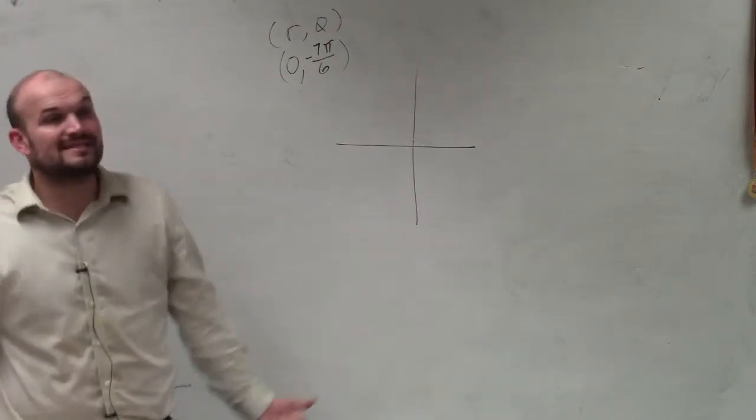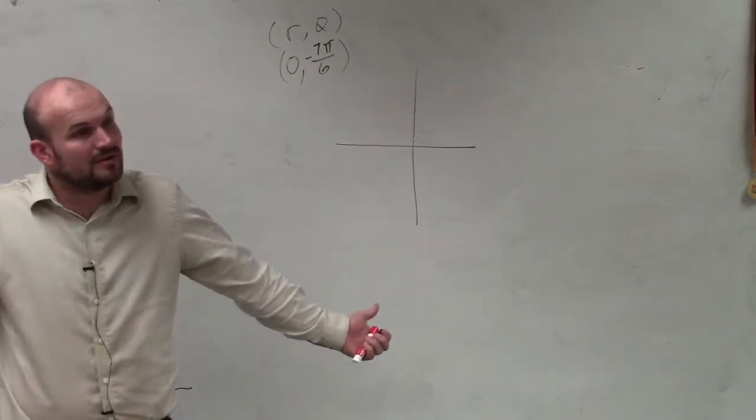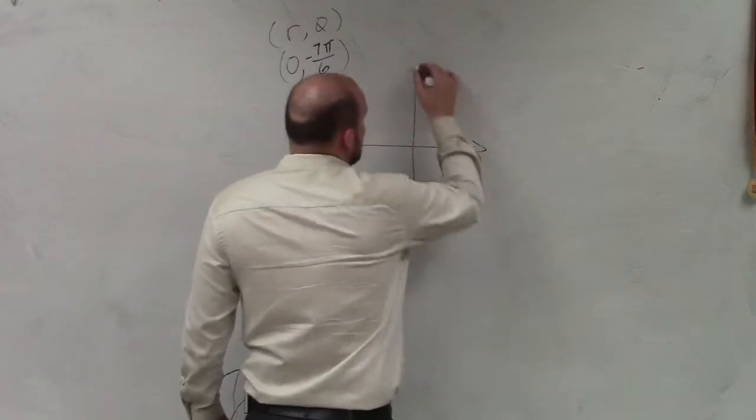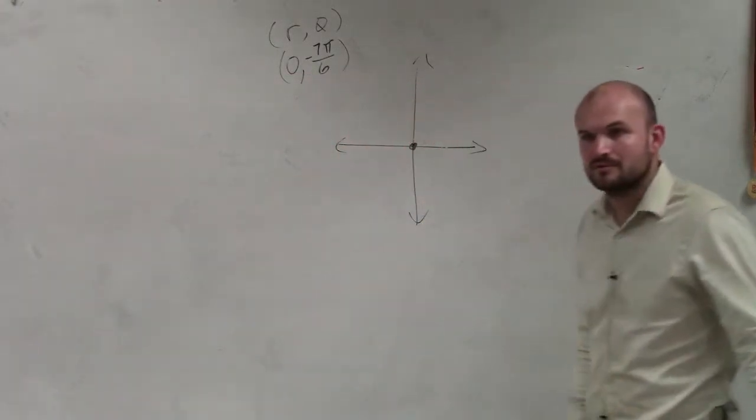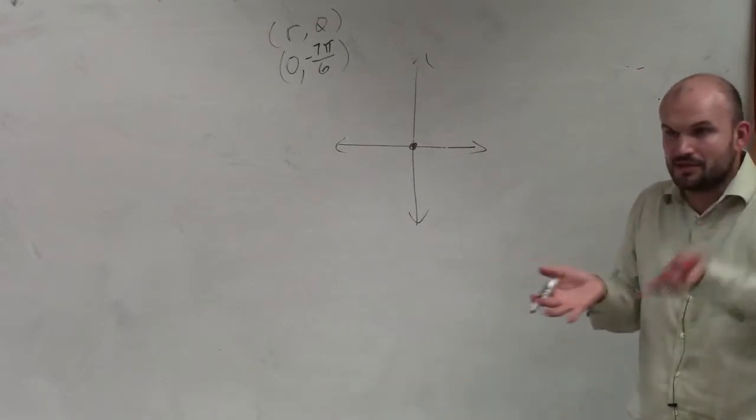Where r represents the radius. Well, the radius in this point, in this case, is 0, right? So therefore, it's going to be at the origin of 0, 0. There is no distance of the radius that is going.